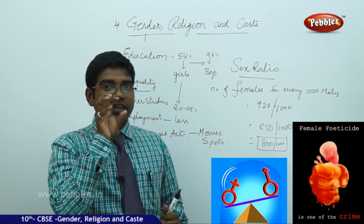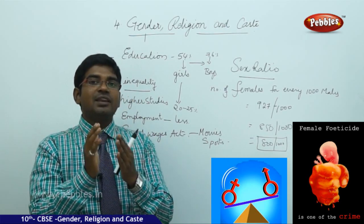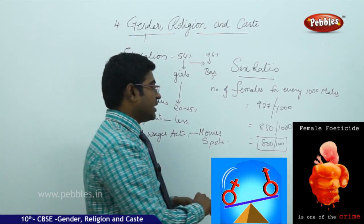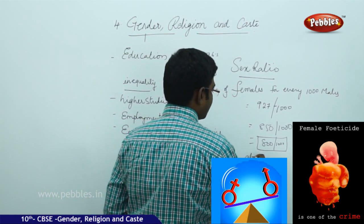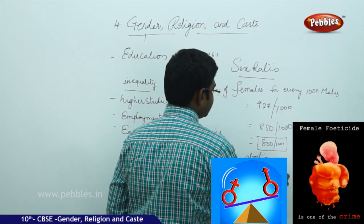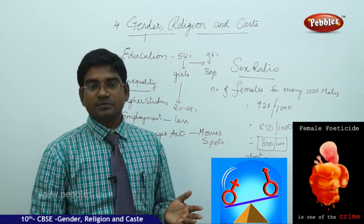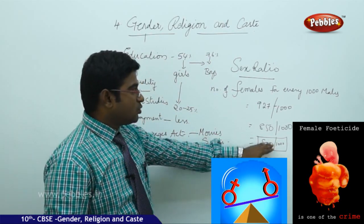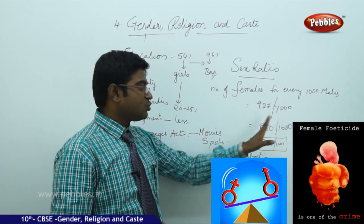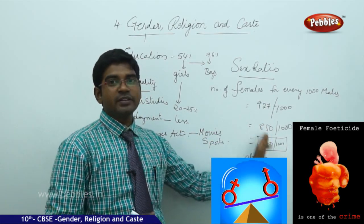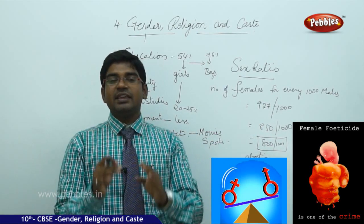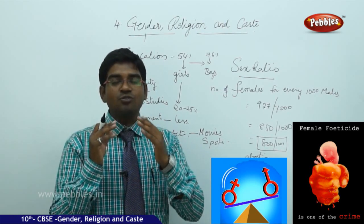If there is any clue that you may have a girl child, immediately they would like to go for the abortion or to abort the child. This kind of abortions reduces the sex ratio of females to males from 927 to 800. This is really a very genuine situation where we have to react for this kind of things.